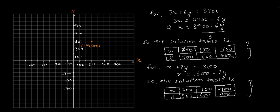Second point: x = 100 and y = 600, so point (100, 600). Third point: y = 700 and x = -100, so the point (-100, 700) lies here. Now let's join these three points.